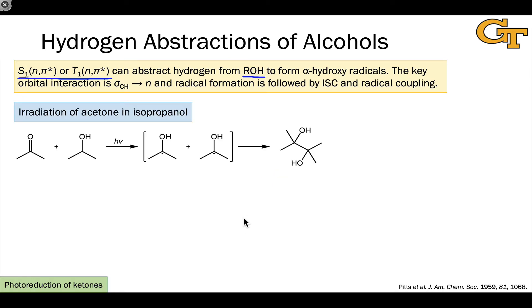This is a primary process that we've already seen. The key primary process is this interaction between the filled sigma-CH orbital of the hydrogen donor and the half-filled n orbital in the n-pi-star excited state of the carbonyl compound. Radical formation is typically followed by radical coupling, and this may require intersystem crossing if we're starting from a triplet state. Intersystem crossing is not required if we're starting from a singlet state.